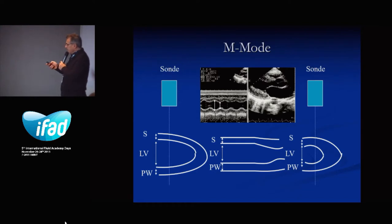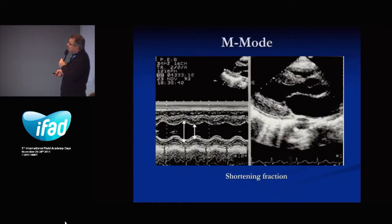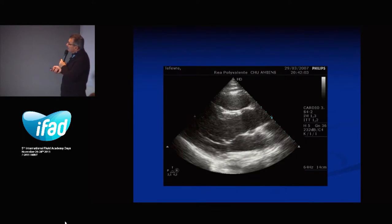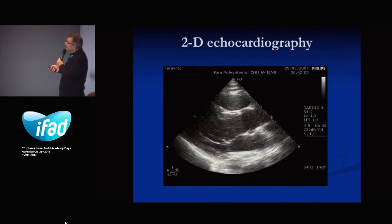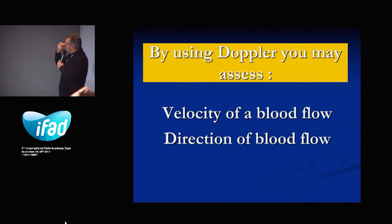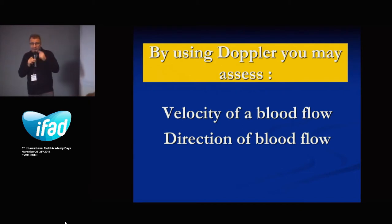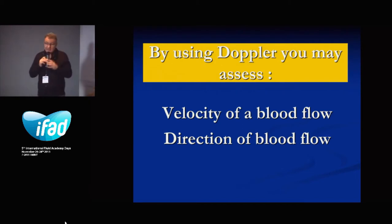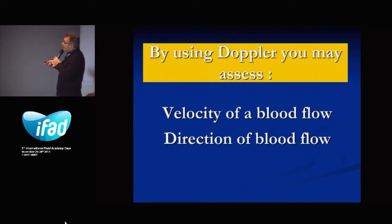The second technique is the Doppler technique. With Doppler, you have many different lines and you can see the heart. Using this technique, we can assess the velocity and the direction of the flow.